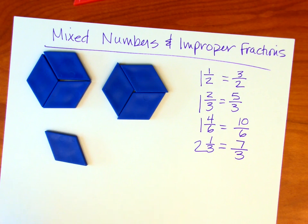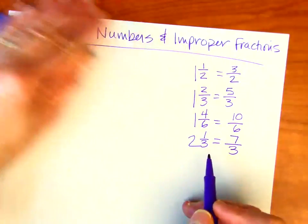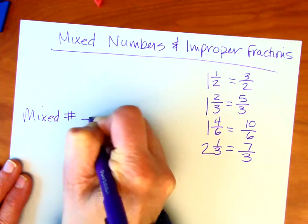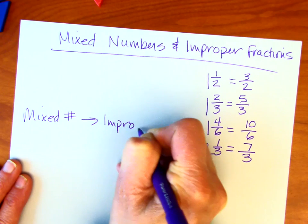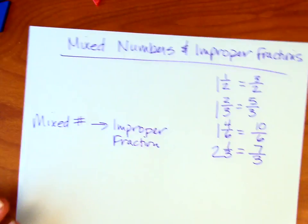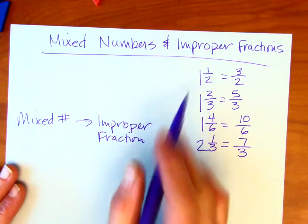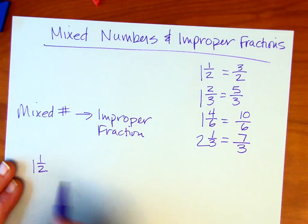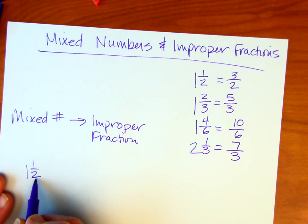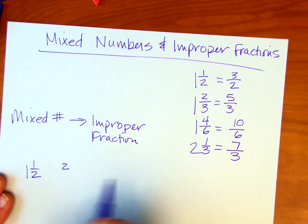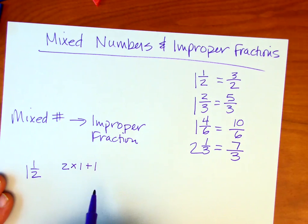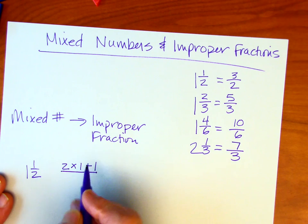Now, let's go ahead and talk about how we can get from a mixed number to an improper fraction, and we're going to do that mathematically. So that means we're putting the model aside, we're just going to look at the numbers. Let's look at this first one here, one and a half. I'm going to rewrite it here, and I already know my answer is three-halves. But mathematically, what we're doing is we're taking the denominator, which is two, and we're going to multiply it by the whole number, and then add the numerator. That's going to be our new numerator. The denominator remains the same.